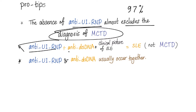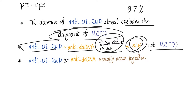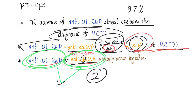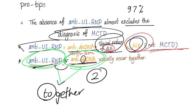Anti-U1 RNP together with anti-double-stranded DNA, plus a clinical picture suggestive of lupus — this is lupus, not mixed connective tissue disease. Similarly, if anti-U1 RNP is together with anti-Smith antibody and you have symptoms of lupus, it's lupus, not mixed connective tissue disease. Anti-U1 RNP and anti-double-stranded DNA usually occur together — that's why in the mnemonic about anti-double-stranded DNA, anti-double-stranded DNA occurs together with anti-U1 RNP.